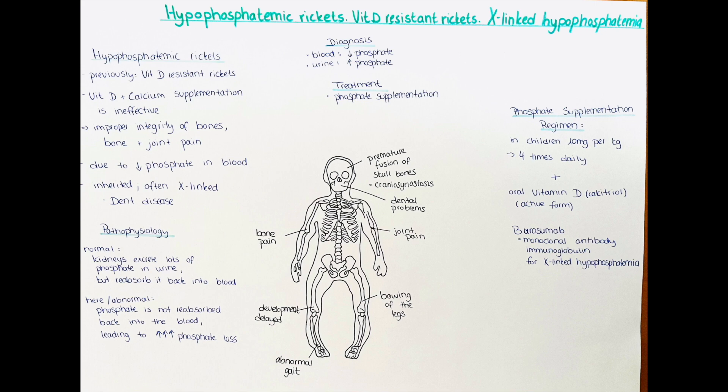This is a disease which previously was called vitamin D resistant rickets. The reason for this is because the usual treatment of rickets — supplementation of vitamin D and calcium — is not really effective for hypophosphatemic rickets. It results in improper integrity of the bones, leading to easily bending or breaking of the bones, bowing of the legs, and improper bone development. It may also cause bone and joint pain. A key point to remember is that it is due to low levels of phosphate in the blood, rather than low levels of vitamin D.